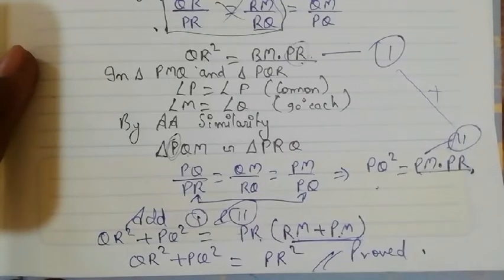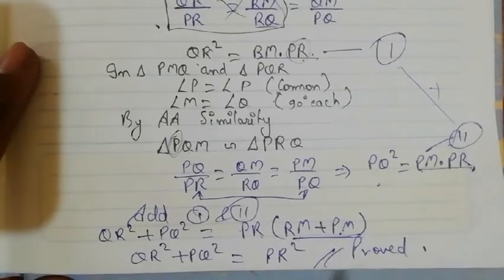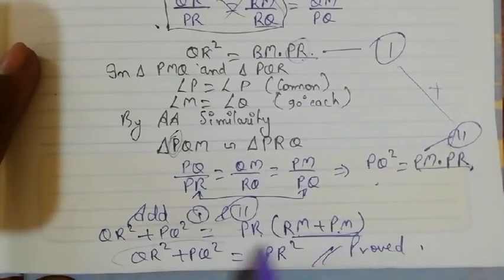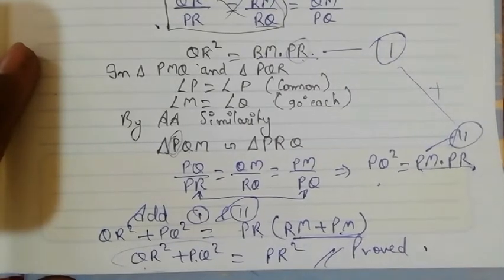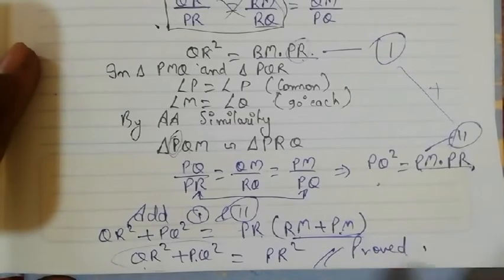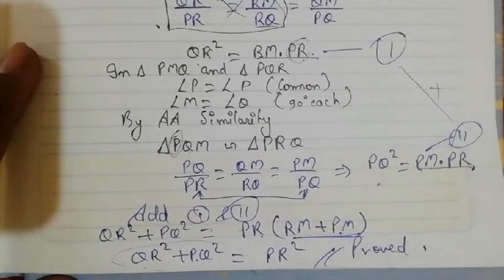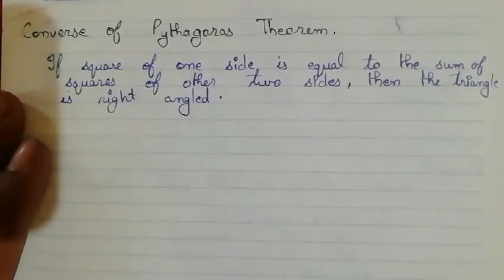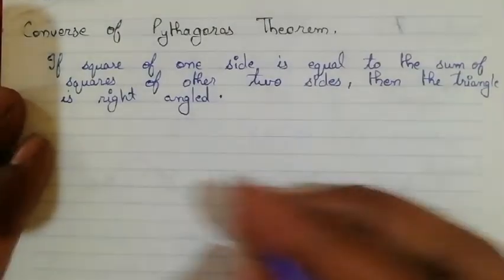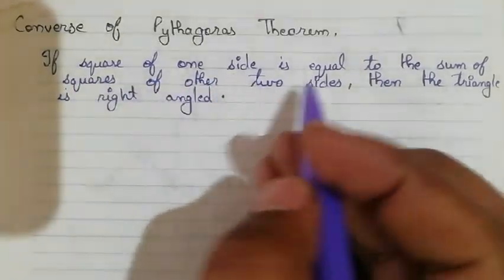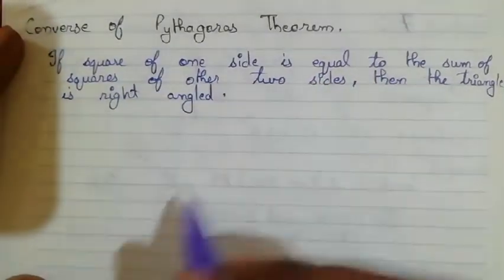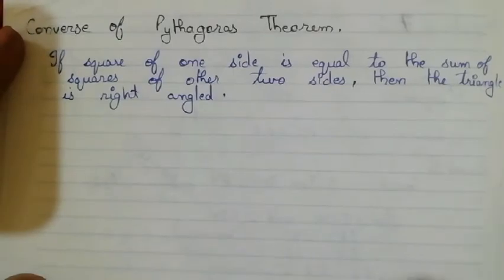Now the converse of the Pythagoras theorem is also true. If PR² = PQ² + QR², then we can say that it is a right-angled triangle. Let us prove that also — this is the converse of the Pythagoras theorem. It states: if the square of one side is equal to the sum of the squares of the other two sides, then the triangle is right-angled.